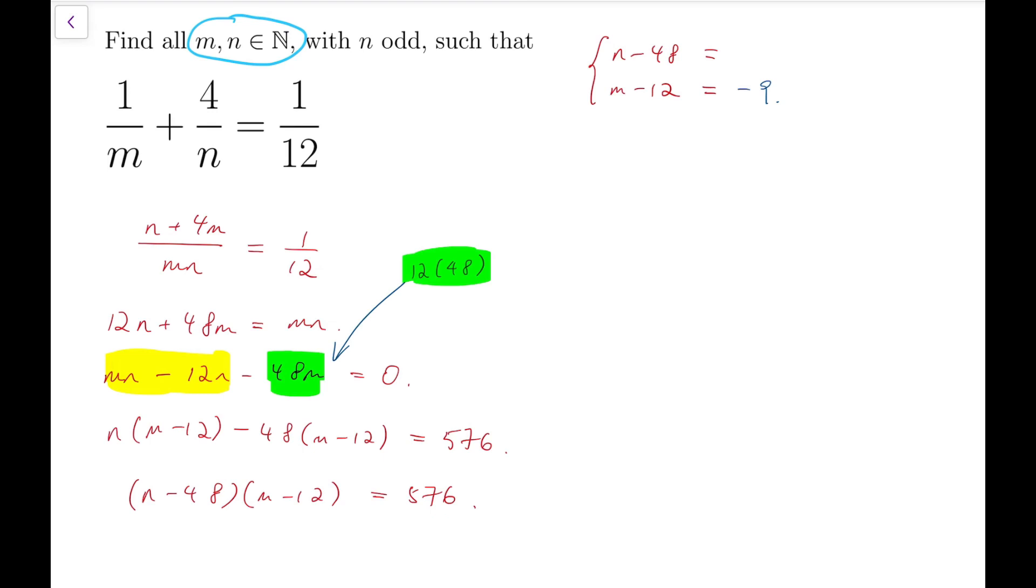But in that case, n minus 48 will be a very, very small number, as in very negative intuitively. For example, in this case, it will become minus 64, and then n will have to be negative. So these kind of numbers cannot hold.